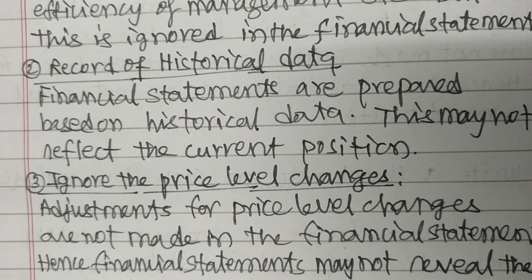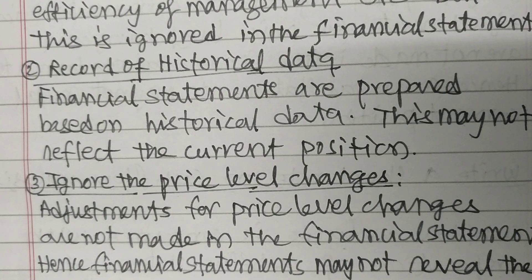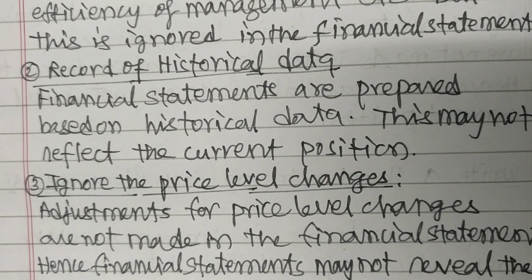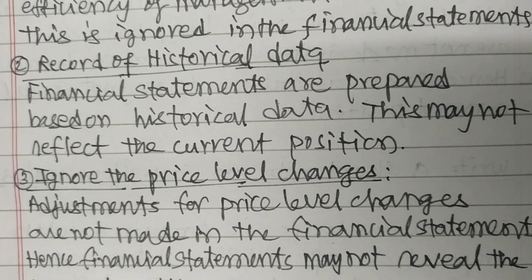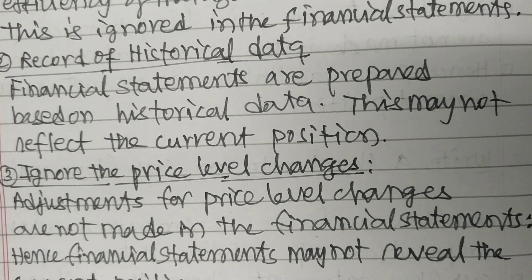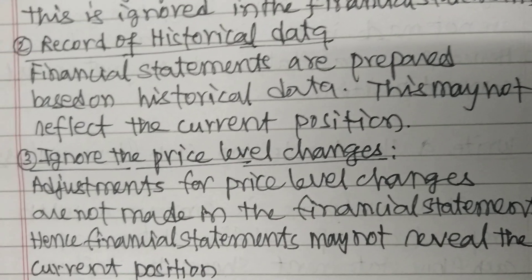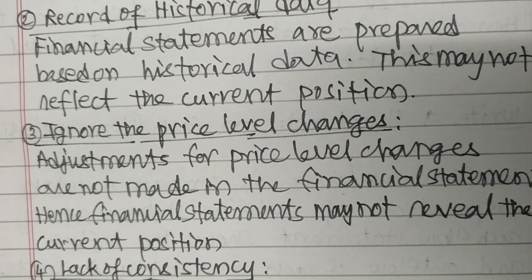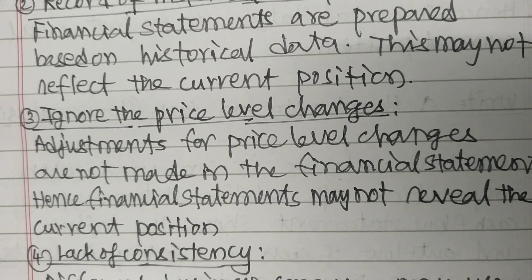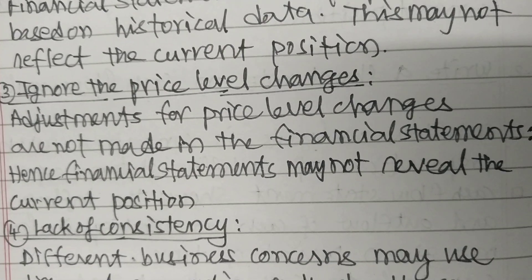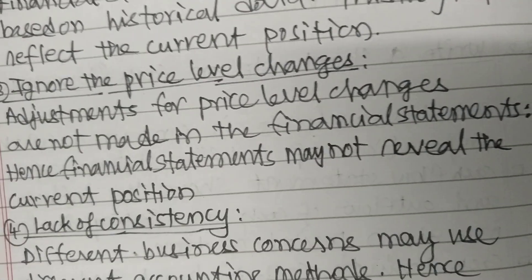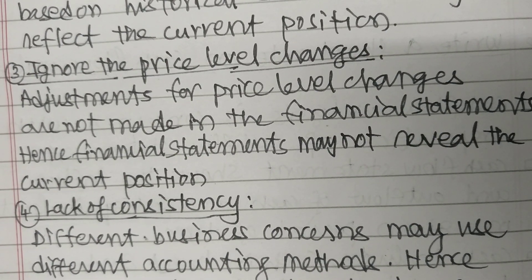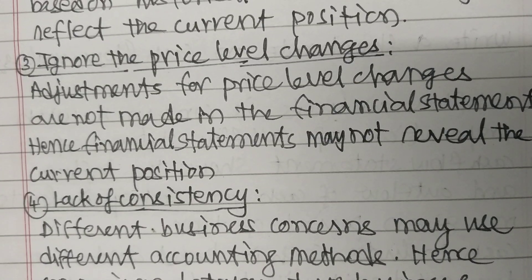Record of historical data: Financial statements are prepared based on historical data. This may not reflect the current position. Ignore the price level changes: Adjustments for price level changes are not made in the financial statements. Hence, financial statements may not reveal the current position.